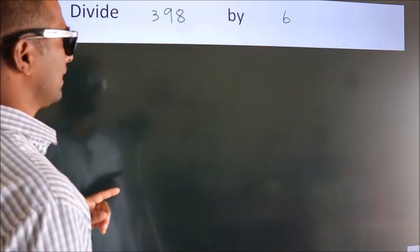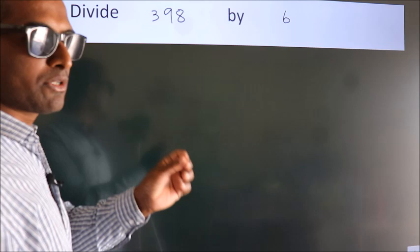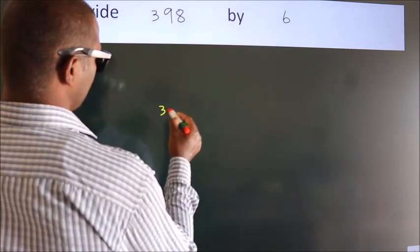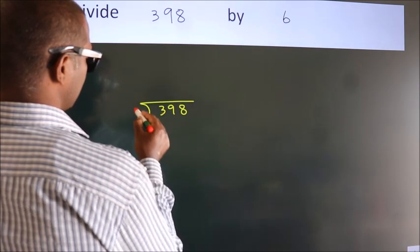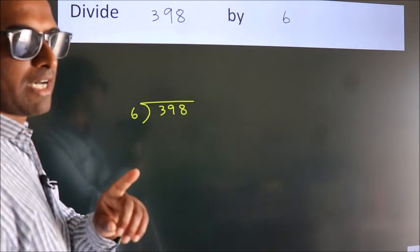Divide 398 by 6. To do this division, we should frame it in this way: 398 here, 6 here. This is your step 1.